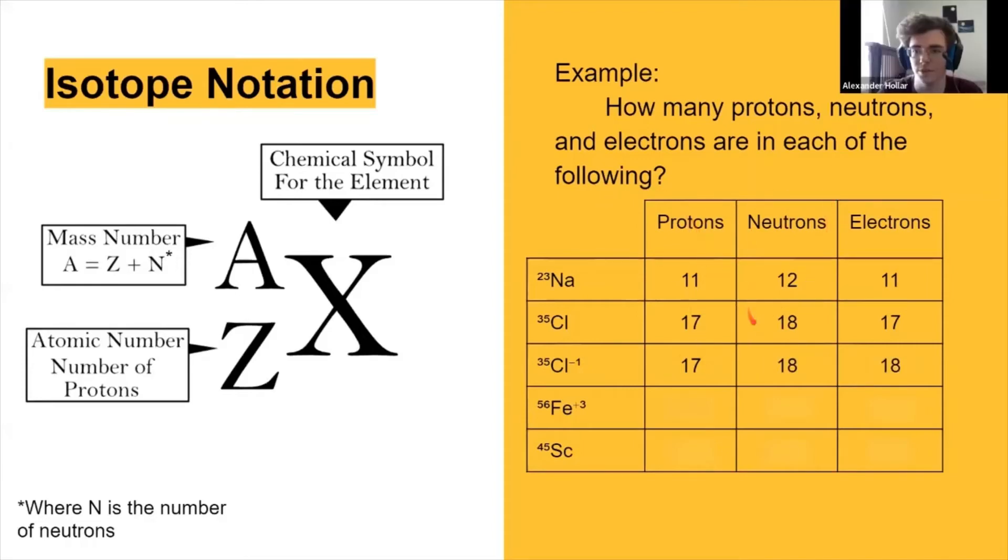Right. So we would have 17 protons, 18 neutrons, and 18 electrons. Because it has that formal negative charge, that means that there's more electrons than protons.